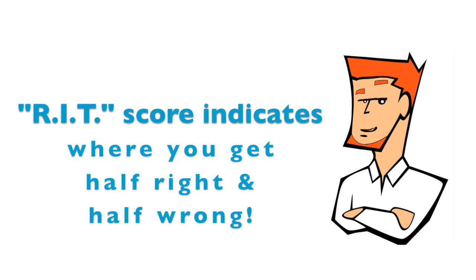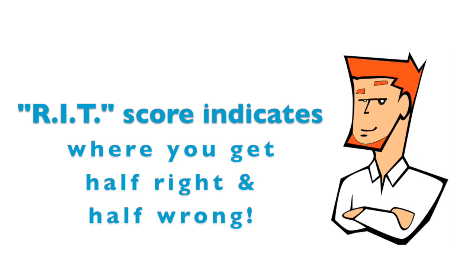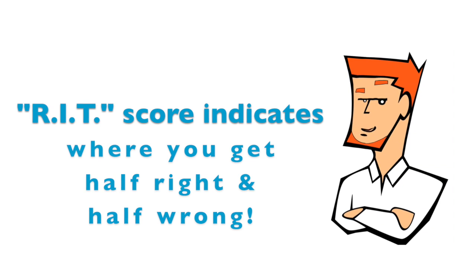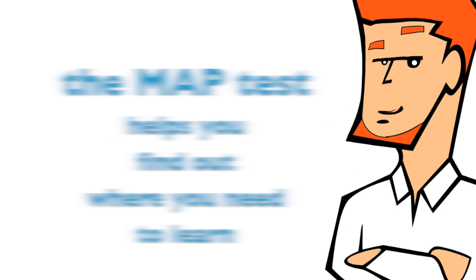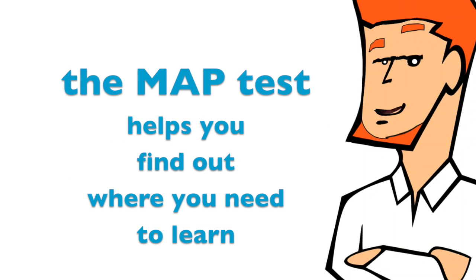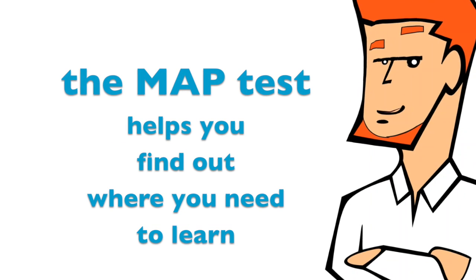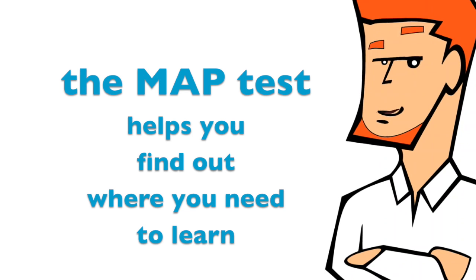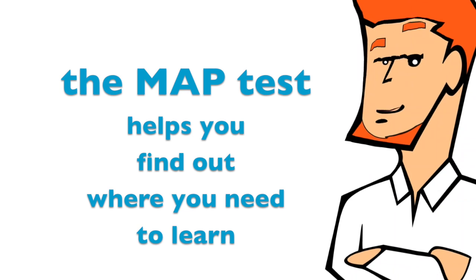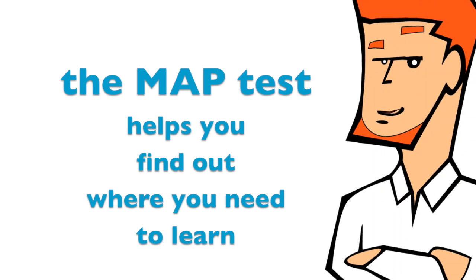RIT scores help teachers understand every student's current achievement level — not based on what they can get right all the time, but what we call their zone of proximal development: the area they need to study to learn the next piece of material. If you're missing questions at a certain level all the time, that level is too hard. If you're getting questions right all the time, that level is too easy.